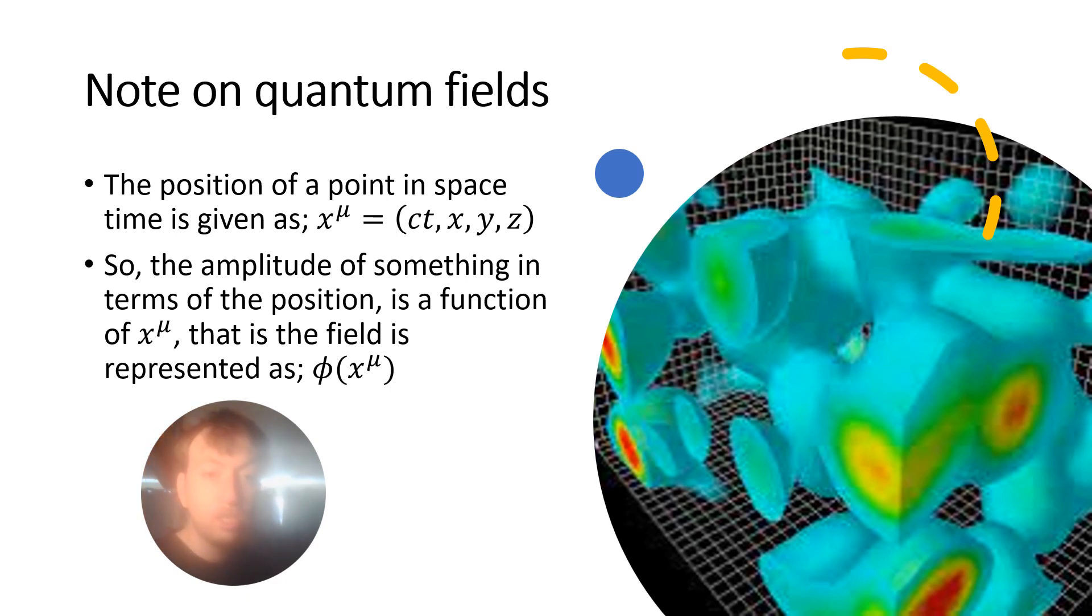And as we said, the field is something that gives an amplitude in terms of the position, so we can think of a field as a function of x mu. And we usually use phi, the Greek letter, to represent this function, so we often represent a field as phi of x mu, where x mu is our position in four dimensional spacetime, which we also call our four position.